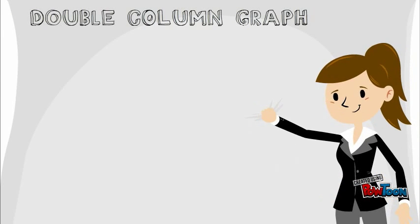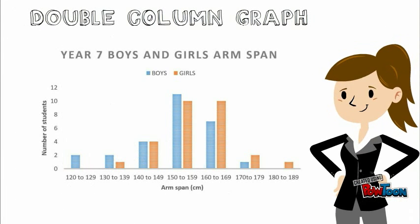Here we have a double column graph which shows both the arm span measurements of the girls and boys. On the horizontal line we have the widths of the arm spans from 120cm to 189cm, and on the vertical line we have the number of students who participated in the questionnaire.